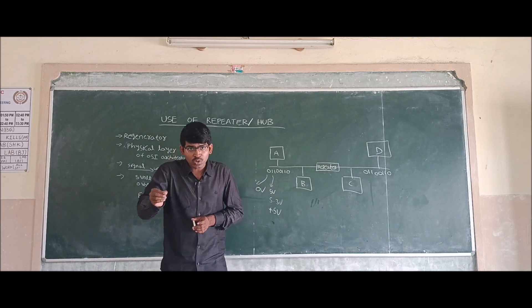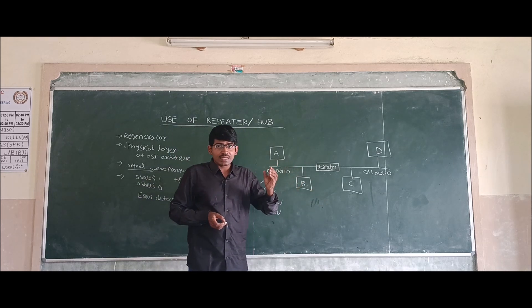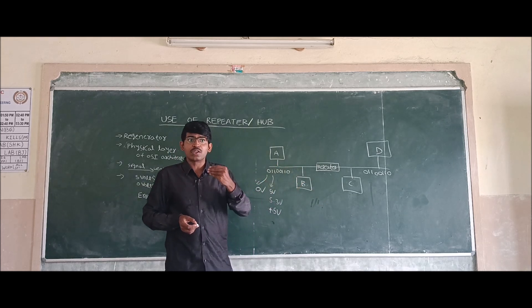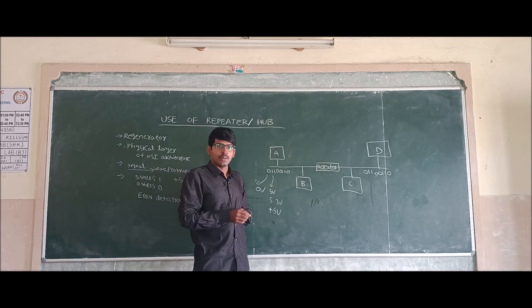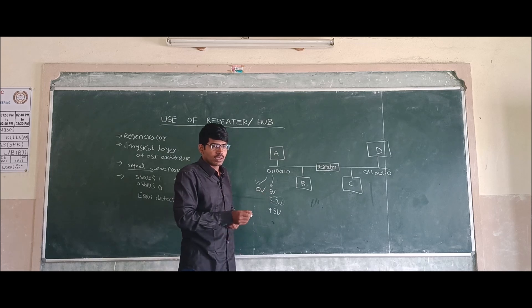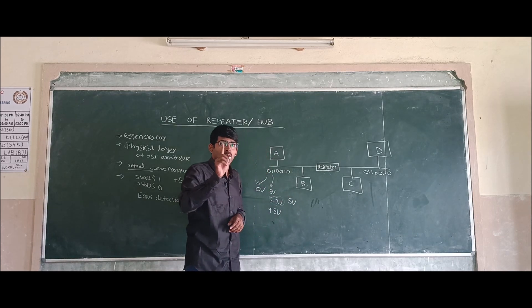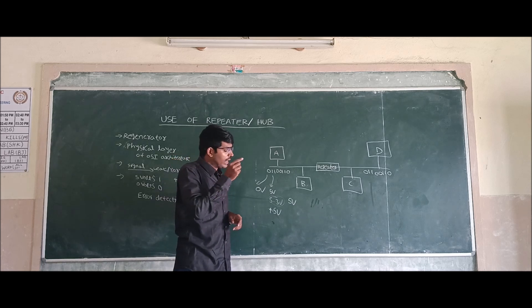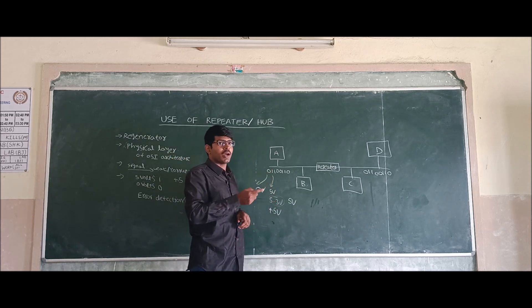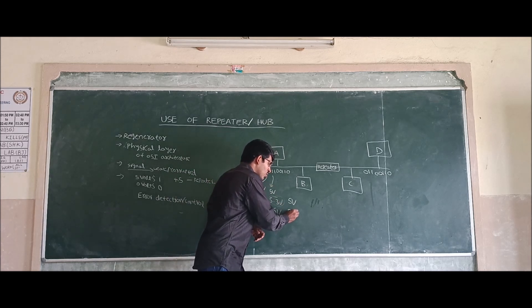In both cases, the repeater acts as an intelligent circuit. Even though the signal is 5.3 volts or 4.5 volts, the repeater understands and regenerates the correct 5 volts only.